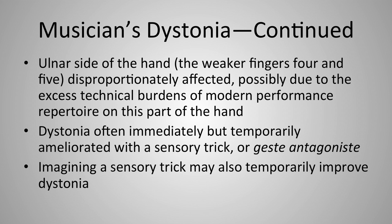Dystonia can be temporarily improved with a sensory trick — called geste antagoniste in French — such as touching a certain part of the hand, which can make the involuntary movement go away. When the sensory stimulus is removed, the dystonia can recur. Interestingly, imagining the sensory trick after finding one that works can also temporarily improve the dystonia. This tells us that the central nervous system is involved in dystonia's development, as opposed to something more peripheral in the hand itself.